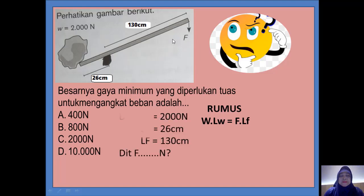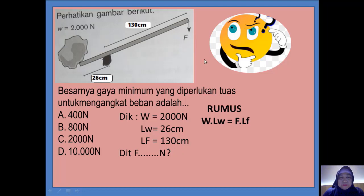Besarnya gaya minimum yang diperlukan tuas untuk mengangkat beban adalah yang F. Bagaimana menyelesaikannya? Kalau isian harus ada cara, tapi kalau PG bisa secara cepat pakai langsung rumus. W berat beban itu 2000 Newton. LW lengan beban yaitu jarak dari titik tumpuh ke beban, yaitu 26 cm. LF adalah jarak titik tumpuh ke F, berarti lengan kuasa 130 cm. Ditanya F berapa Newton atau kuasa. Rumusnya adalah W kali LW sama dengan F dikali LF.